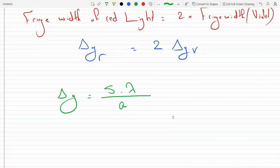And so plug this up here for each one of these. And so we get, if we do that, we get for red: s lambda red divided by a has to equal 2s...